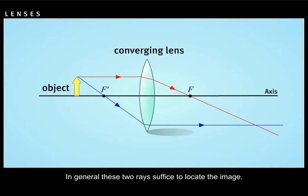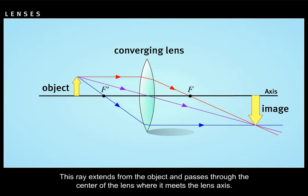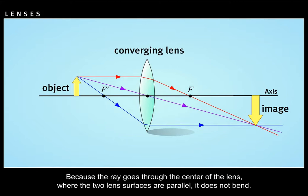In general, these two rays suffice to locate the image. However, the two focal points are equidistant from the lens, a third locating ray can be drawn. This ray extends from the object and passes through the center of the lens where it meets the lens axis. Because the ray goes through the center of the lens where the two lens surfaces are parallel, it does not bend.